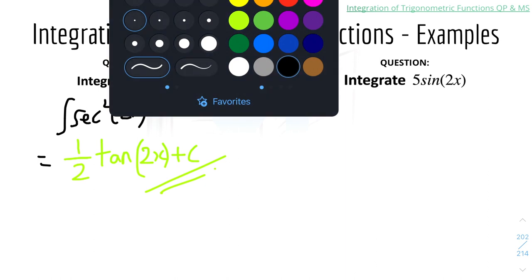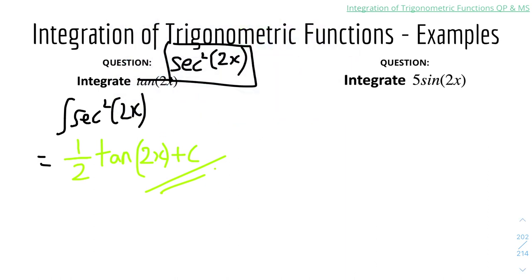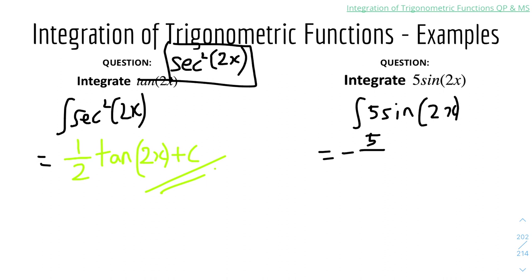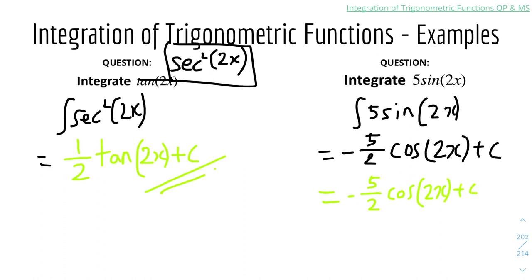The last question has both a coefficient and ax + b. Integrate 5sin(2x). We know integrating sin gives minus cos, so put a minus sign first. Then 5 over the derivative of the bracket — differentiating 2x gives 2 — so it's 5 over 2. Integrating sin gives cos, and the bracket stays the same: 2x. So the answer is minus 5/2 cos(2x) + c.